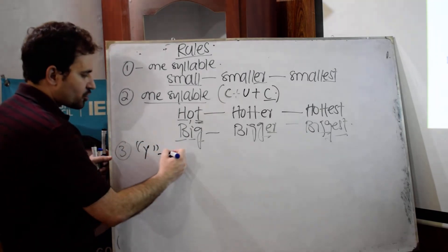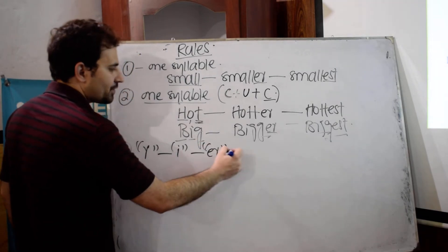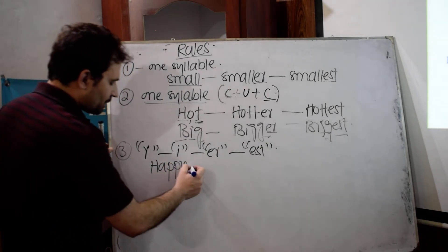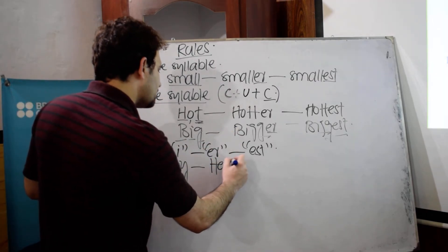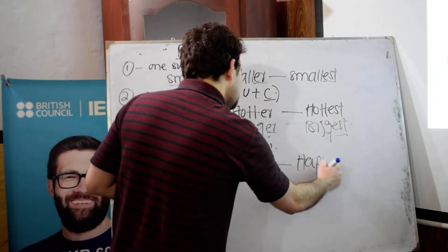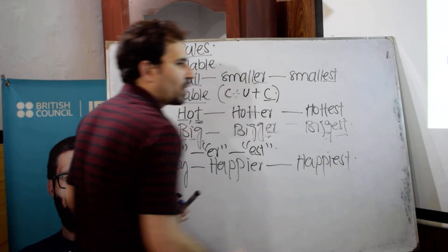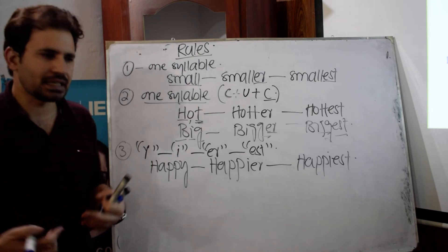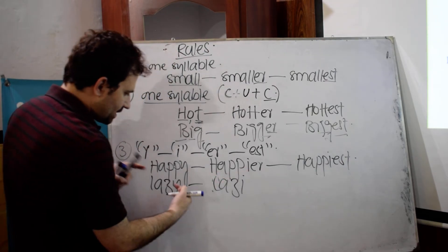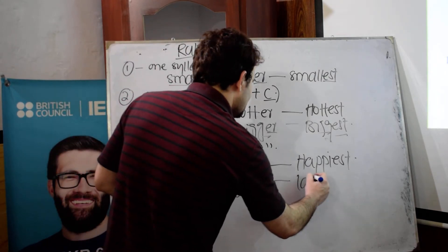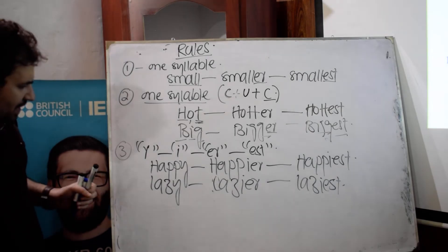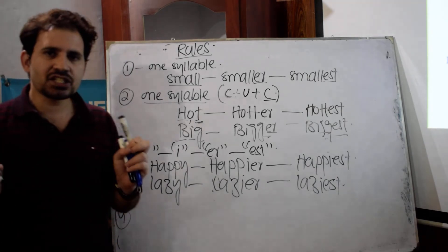Rule number three: if an adjective ends with 'Y,' change the 'Y' to 'I' and add 'er' for comparative and 'est' for superlative. For example, 'happy' — change 'Y' to 'I' and add 'er': 'happier'; and for superlative add 'est': 'happiest.' Similarly, 'lazy' — change 'Y' to 'I': 'lazier' (comparative) and 'laziest' (superlative).